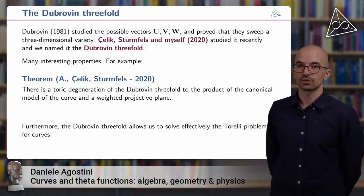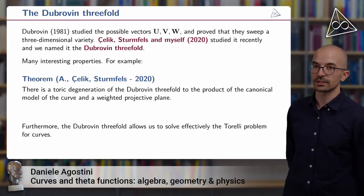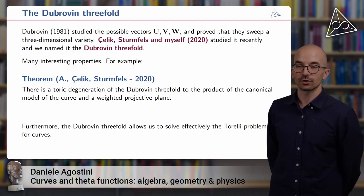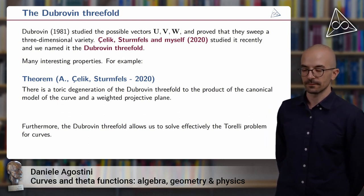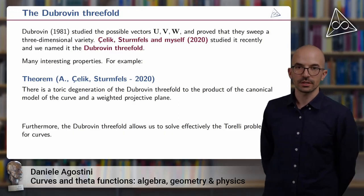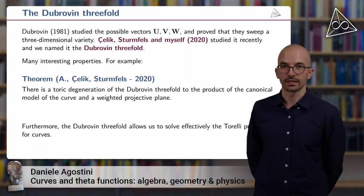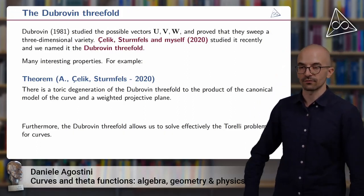For example, we show that there exists an explicit toric degeneration of the Dubrovin threefold to a product of the canonical curve that we started from with a certain weighted projective plane. With such a degeneration, it is very easy to compute many interesting algebraic geometric objects or properties of the Dubrovin threefold.